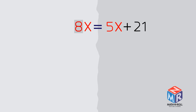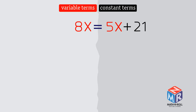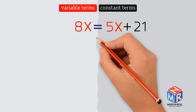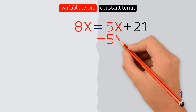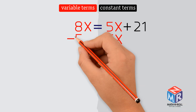8 is greater than 5, so we choose the left side for variable terms and the right side for constant terms. Now we need to get the variable term off of the constant side. We subtract 5x from both the constant side and the variable side.